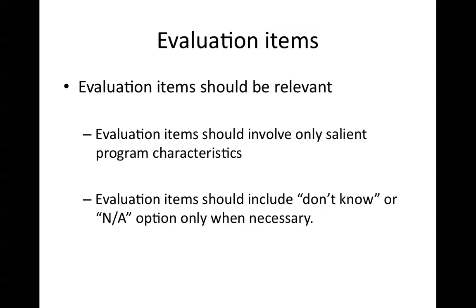Items should also be very relevant, and you should include salient program characteristics. More specifically, when asking how well agency X is achieving its goals, you should ask not just the general concept of 'how well do you feel you've achieved your goals,' but more specifically: how well do you feel you've achieved goal A? How well do you think you've achieved goal B? And in the process of achieving goal A or goal B, you were supposed to do X, Y, Z — how well did you accomplish X, Y, and Z?